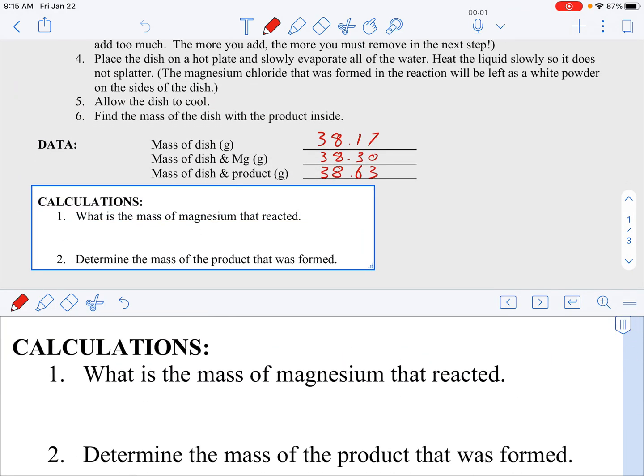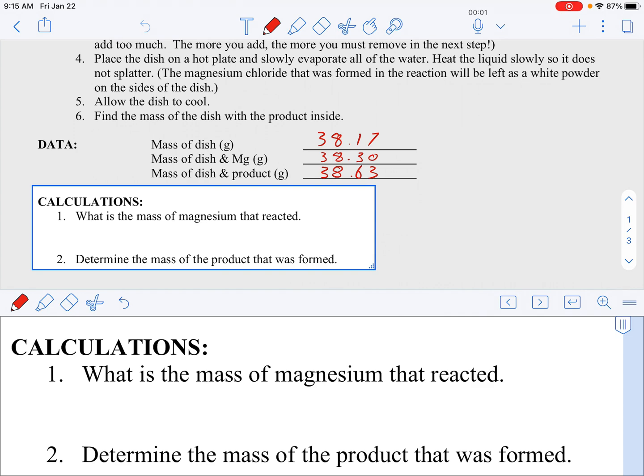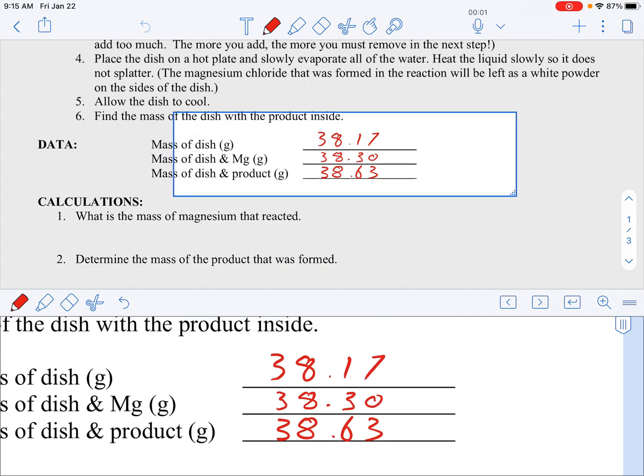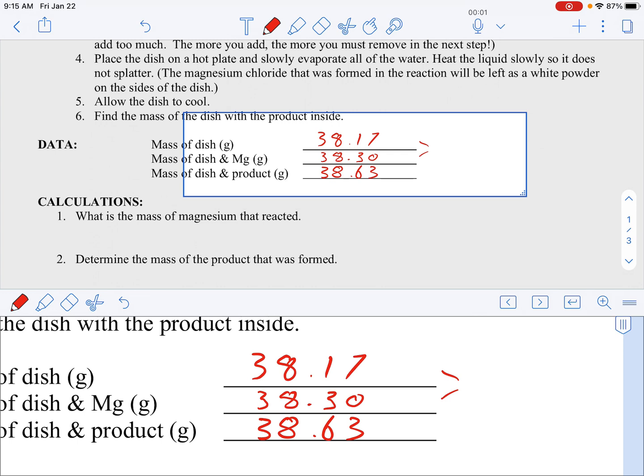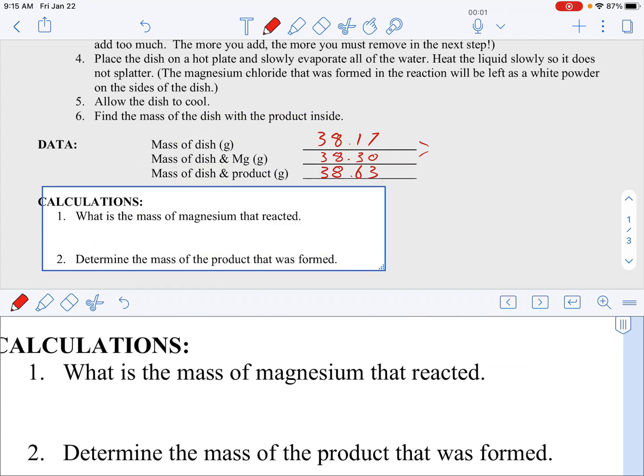So question number one, what's the mass of magnesium that reacted? That's simply the difference between our first two data points. So the mass of the empty dish and the mass of the dish plus the magnesium. So we should show our work: 38.3 minus 38.17 equals 0.13 grams of magnesium.